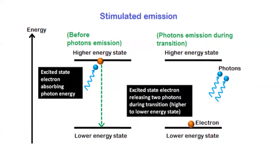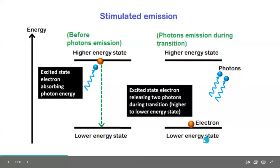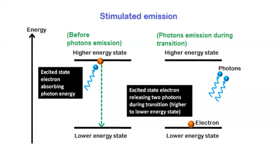The next step is stimulated emission. Unlike spontaneous emission, stimulated emission is not natural — it is something we create artificially. We excite an electron that is already in the higher energy state E2 using a photon, giving it more energy than it should have. As a result, it emits two photons and returns to the lower energy state. We are forcefully returning the excited electron to the ground state without completing its lifetime.